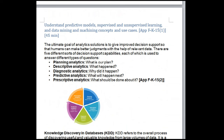The ultimate goal of analytics solutions is to give improved decision support so that humans can make better judgments with the help of relevant data. There are five different sorts of decision support capabilities: Planning analytics (what is our plan?), Descriptive analytics (what happened?), Diagnostic analytics (why did it happen?), Predictive analytics (what will happen next?), and Prescriptive analytics (what should be done about it?).